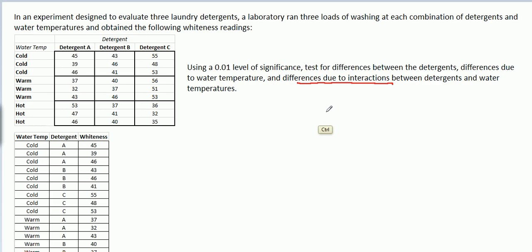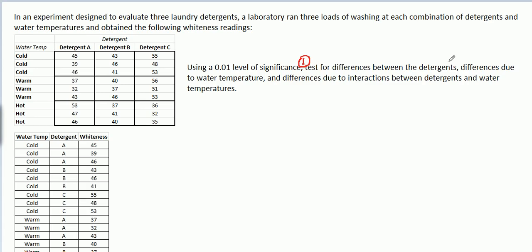We're going to do all our tests at a level of significance of 1%, that's alpha = 0.01. So what I want to do in the remainder of this part is to set up those hypothesis tests. These three items — testing for differences between the detergents, testing for differences between the water temperatures, and testing whether there is an interaction — are three separate hypothesis tests that a two-way ANOVA will be able to handle.